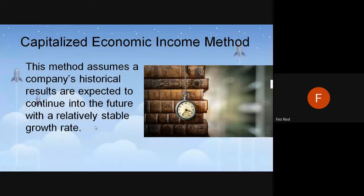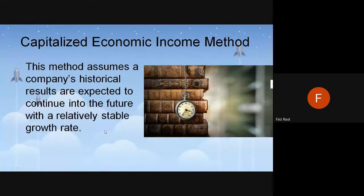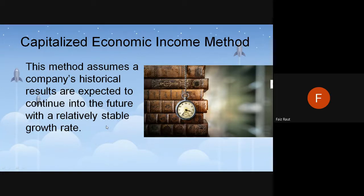The capitalized economic income method assumes a company's historical results are expected to continue into the future at a relatively stable growth rate. You take the past three to five years of data, calculate the growth rate, and expect that growth rate to continue in the next few years. Whatever income the company has been getting will continue in the next few years as well.